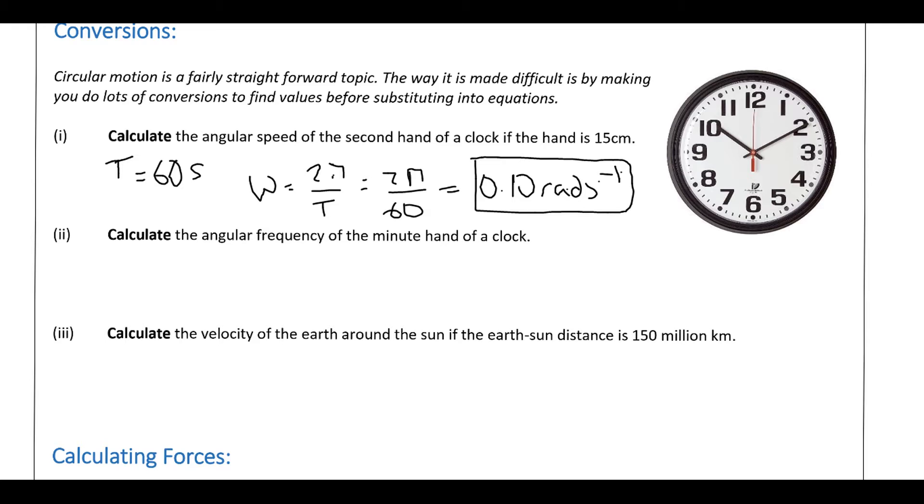Calculate the angular frequency of the minute hand. So for the minute hand, the time period is 1 hour. Well, not 1 hour... So we've got this one here, so it takes a full hour to go 1 full rotation, so it's 3600 seconds.